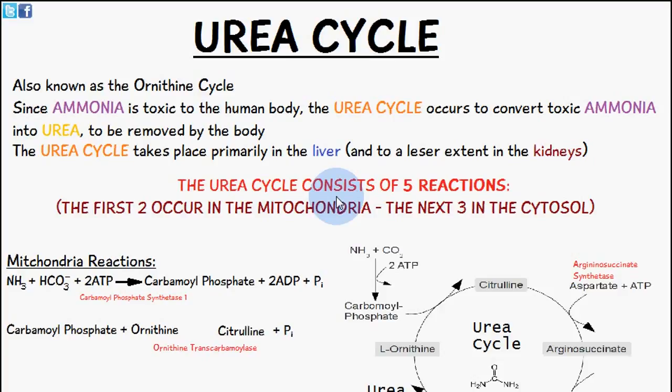Welcome to 5-Minute School. In today's video we're going to be talking about the urea cycle, also known as the ornithine cycle. Ammonia is toxic to the human body, and the urea cycle converts this toxic ammonia into urea, which is then removed from the body. The urea cycle takes place primarily in the liver and to a lesser extent in the kidneys.